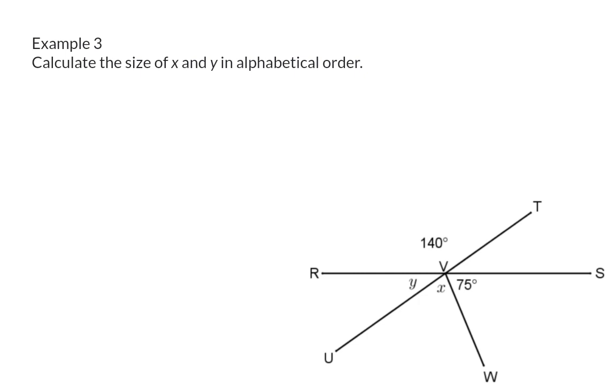Example 3: Calculate the size of x and y in alphabetical order. This alphabetical order forces you to solve x and y in a specific manner. Otherwise, there's probably more than one option to get to x and y. If you start off with angle x, you might notice that it lies on a straight line. But because we don't have the third angle on that line, we cannot solve x yet.